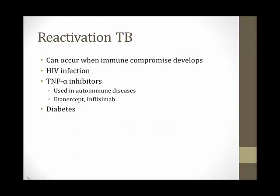Many people exposed to TB don't know it and have latent infection. As long as their immune system is normal, they'll be fine their entire lives. But if immunocompromise develops — such as HIV infection, certain drugs especially TNF-alpha inhibitors like etanercept and infliximab, or diabetes — they can get reactivation tuberculosis. When starting certain drugs, you often test people for latent TB to avoid triggering reactivation.